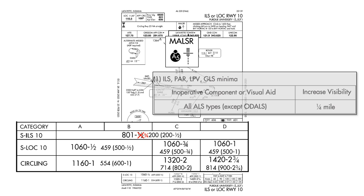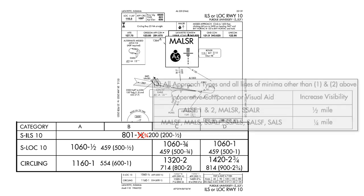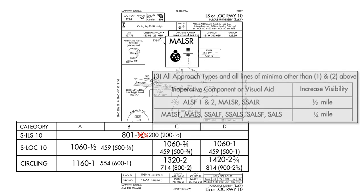What about the localizer-only and circling minimums? Further down on the inoperative components page, we see how to treat approaches other than an ILS. For our inoperative MALSR, we need to increase minimums by a half mile. Let's just focus on the minimums for CAT A and B aircraft. For the localizer, we need to go up to a full mile, and the circling minimum becomes a mile and a half.